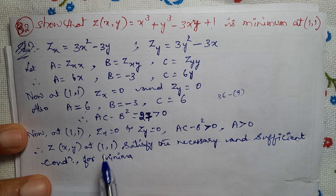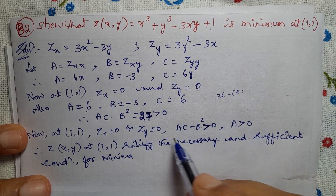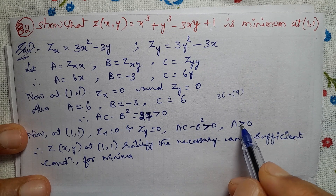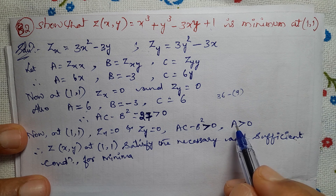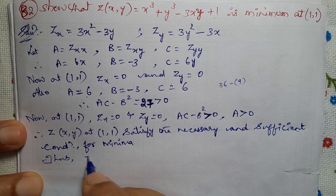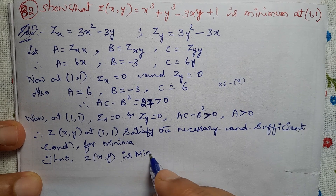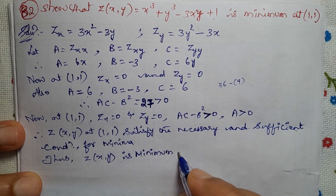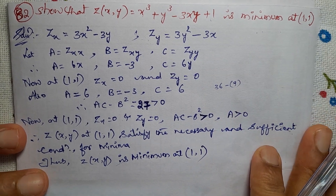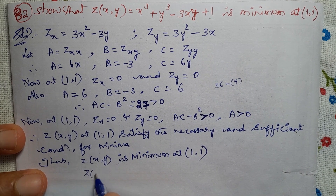The point (1, 1) is a minimum point. Z(x, y) at (1, 1) satisfies the necessary and sufficient condition for minimum. Thus, Z(x, y) is minimum at (1, 1).